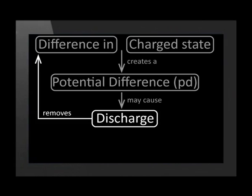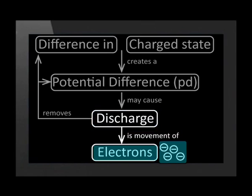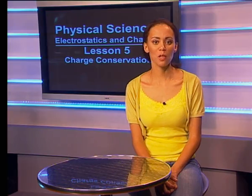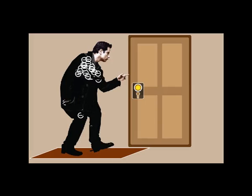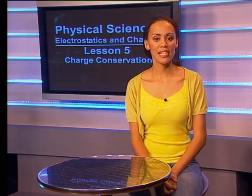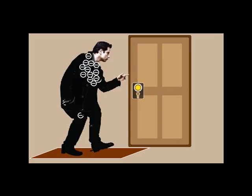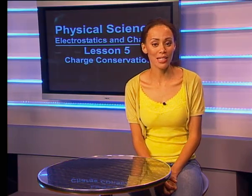The discharge removes the difference in charged states and the potential difference between the two objects, making the system more stable. An electric discharge is the movement of electrons from an object which is more negative to one which is less negative. In this simulation, we see that electrons are rubbed off the carpet onto the man — he is now charged. There is a potential difference between the man and his surroundings, so discharge can occur. The door handle is an electric conductor, so when the man gets near it, electrons rush toward it in a spark. The man is now neutral again — he is discharged.